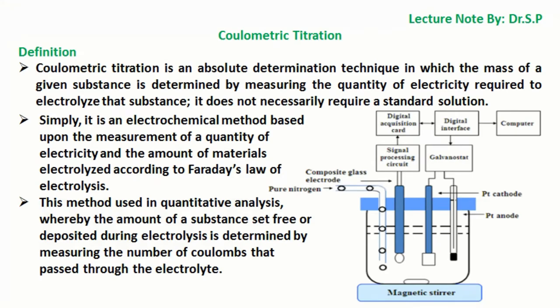In this tutorial we will discuss coulometric titration. Let's start with the definition. Coulometric titration is an absolute determination technique in which the mass of a given substance is determined by measuring the quantity of electricity required to electrolyze that substance. It does not necessarily require a standard solution.